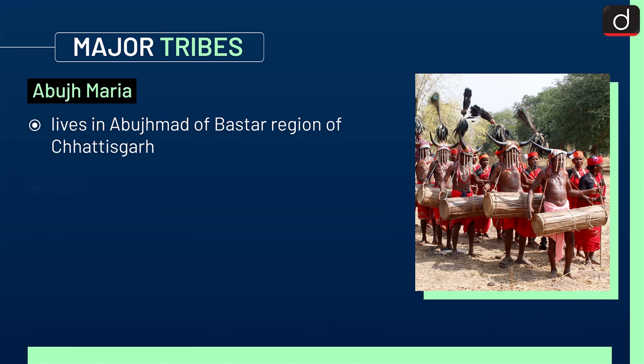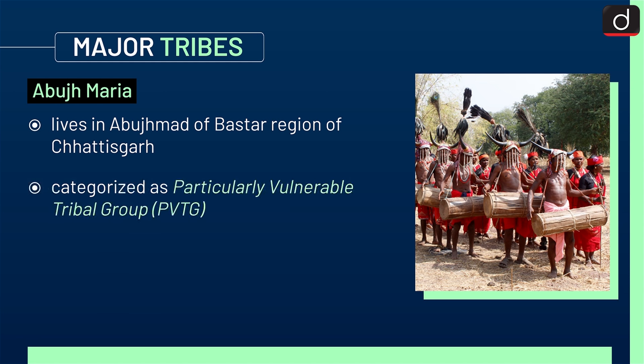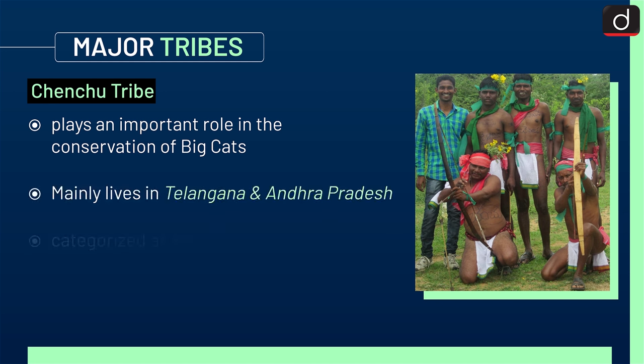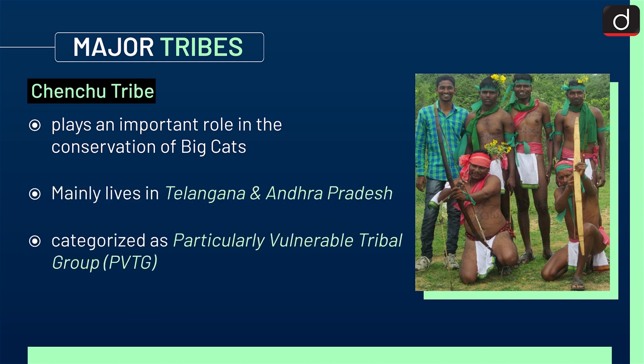The Abhuj Marya tribe lives in Abhuj Madh of the Bastar Region of Chhattisgarh. It is categorized as a Particularly Vulnerable Tribal Group, i.e., PVTG. Moving on to the Chenchu tribe — this tribe plays an important role in the conservation of big cats. It mainly lives in Telangana and Andhra Pradesh, and is also categorized as PVTG.